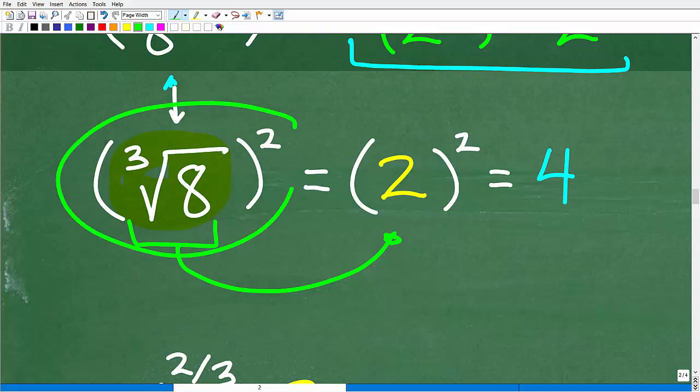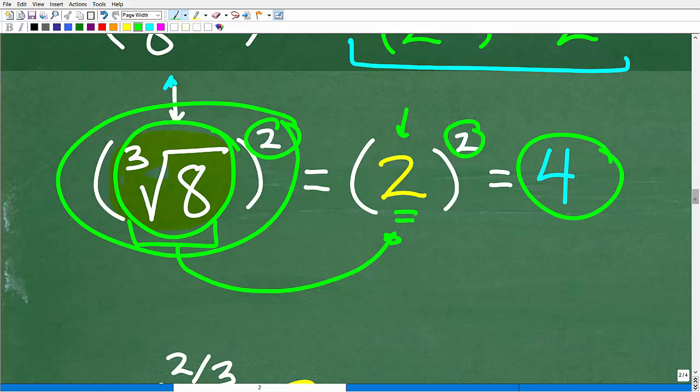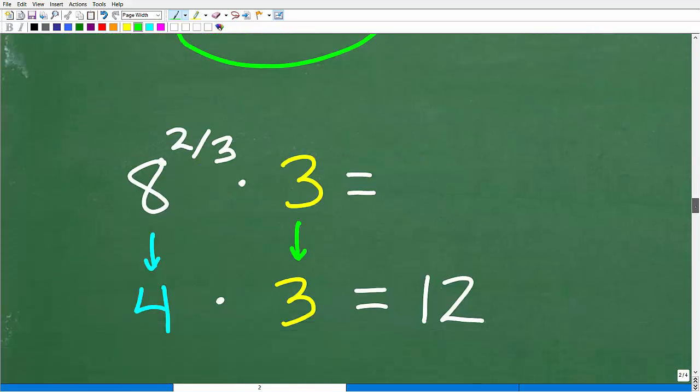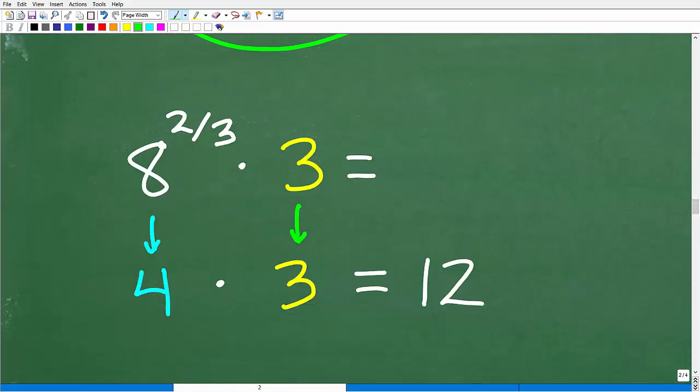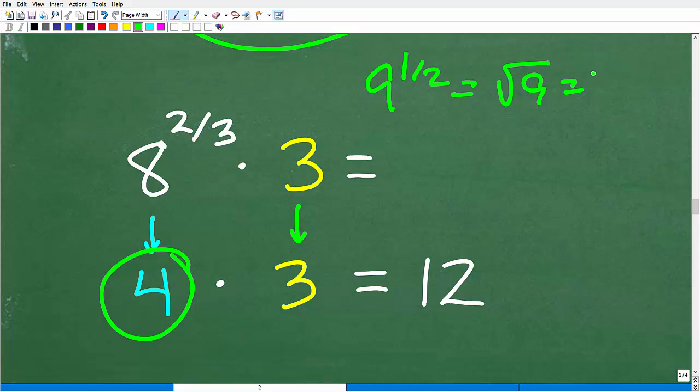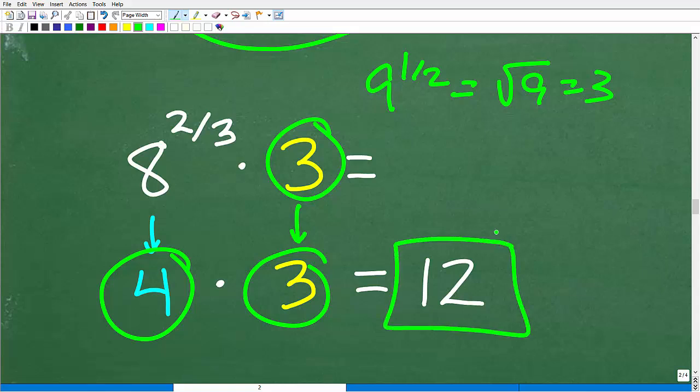The cube root of 8 is 2. So this right here really is the same thing as 2 squared. The cube root of 8 is 2, and we're going to square that. So 2 squared is 4. And now we are basically done. So 8 to the 2/3, after doing all that work, is 4. Remember, we had 9 to the 1/2, which is the square root of 9, which is 3. So that is going to be 3 on this side of this product. So 4 times 3 is 12.